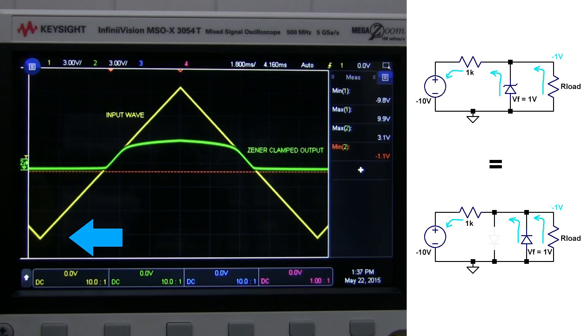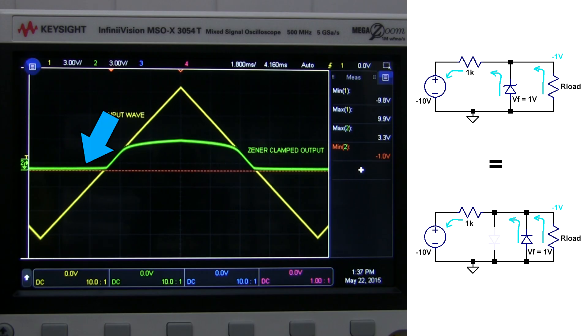Over here, when the input voltage is minus 10 volts, there's enough voltage to forward bias the Zener diode. Some current flows through the Zener diode, and some flows from the output. The forward voltage drop is 1 volt, so it effectively clamps the output voltage to minus 1 volt.